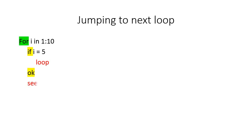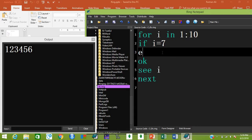To skip a value and jump to the next iteration, use the 'loop' command — equivalent to 'continue' or 'next' in other languages. For example, replacing 'exit' with 'loop' when i equals 7 causes 7 to be skipped. The output prints 1,2,3,4,5,6 then jumps to 8,9,10 — ignoring 7.